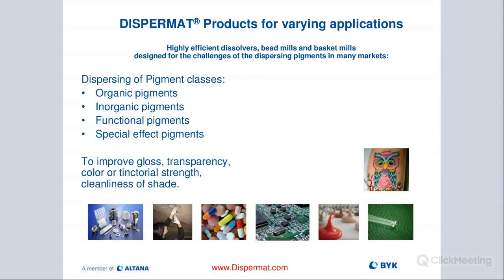Just a quick introduction — how and where do you use the Dispermats? Basically, we were born out of the coatings world and they were first and foremost used to disperse pigments. Over the years, the instruments have found new end-use markets. Battery is a big one, as well as oil and petrol, pharmaceutical, and agriculture.